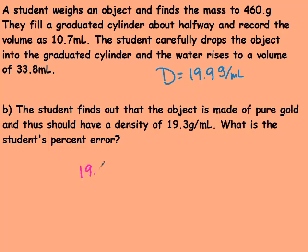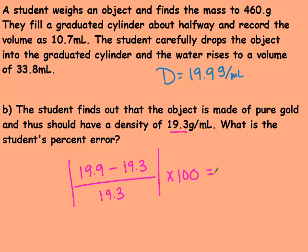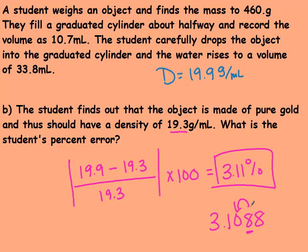The experimental value should have been 19.9. The actual was 19.3. That's what's found in your reference tables. Actual goes on bottom. I'm absolute valuing it, and I'm going to multiply by 100. So if you said 3.11%, you are correct. Remember that we want two numbers after the decimal, and make sure that you're rounding. Because in the calculator, you get this, but that 8 should have rounded that 0 up.